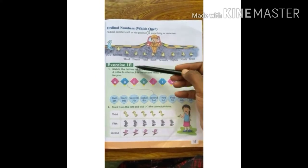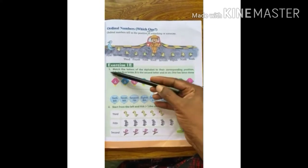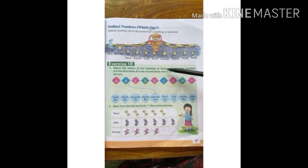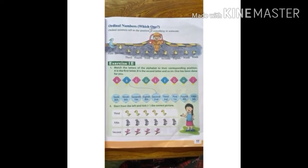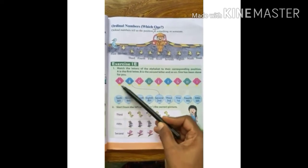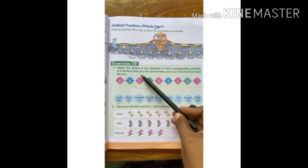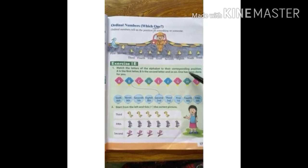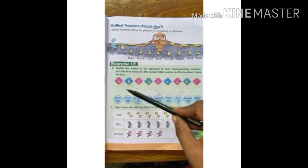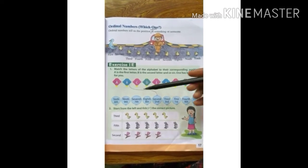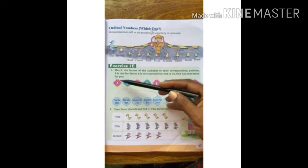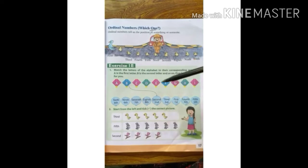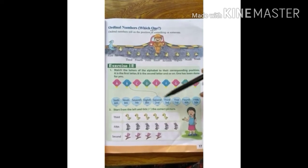Exercise 1E, Number 1. Match the letters of the alphabet to their corresponding position. A is the first letter, B is the second letter and so on. One has been done for you. Now let us do the next one. Number A — it is in the first position. We will match it with the ordinal number first.